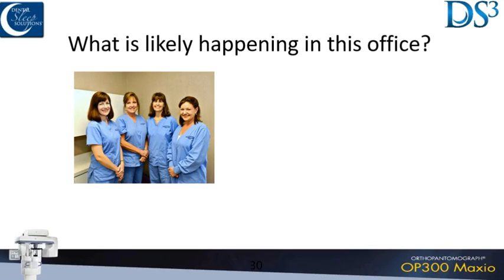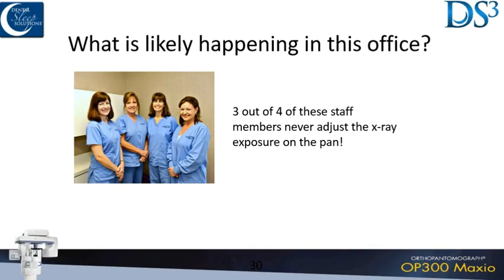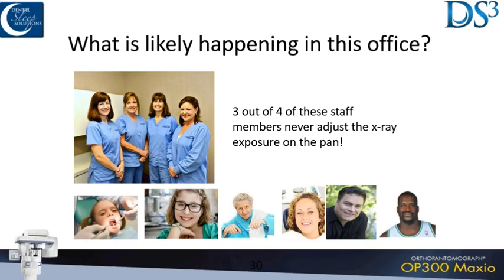Automatic dose control is a patented feature on an Instrumentarium product. In an average office, you have four or five staff members, and most of those staff members are not going to change the settings when taking pans or cone beams — they're going to shoot everybody the same. What Instrumentarium did was allow the sensor to register the radiation being received and control the tube head live time. That way, your staff doesn't have any worries about changing settings. Clinicians get the perfect image every time, and more than anything, your patients are safer — getting the lowest dose possible even with the best images. You'd have a different dosage for a large person versus a small child, and it automatically does that for you.